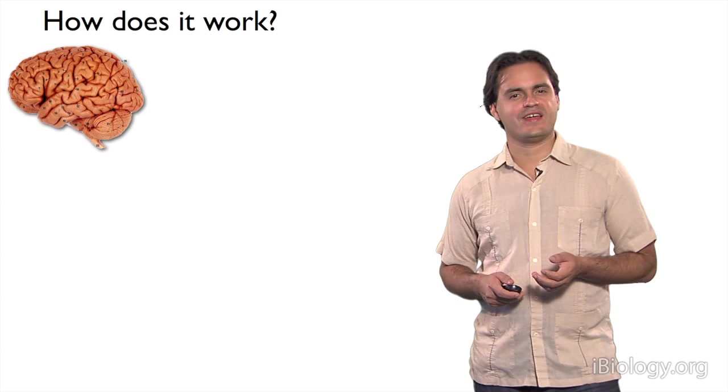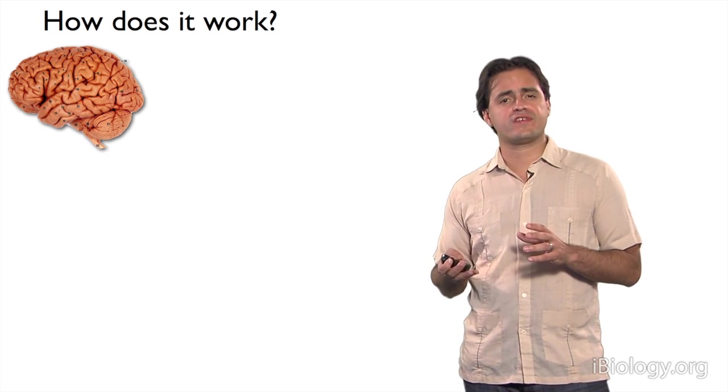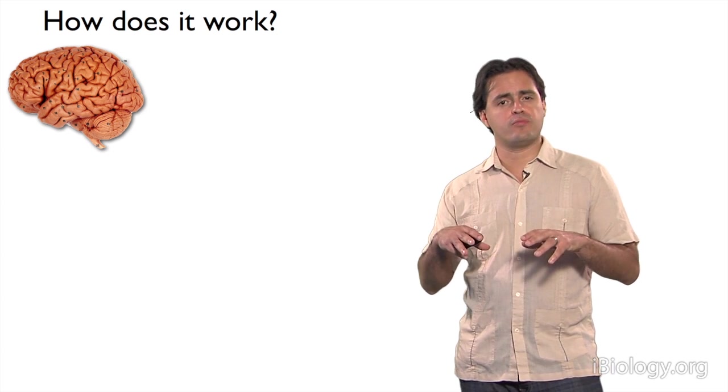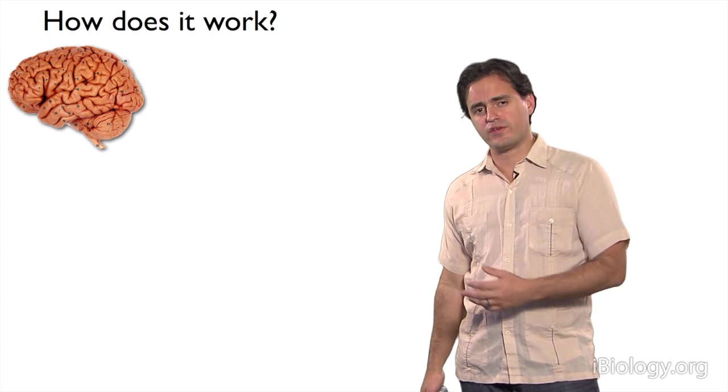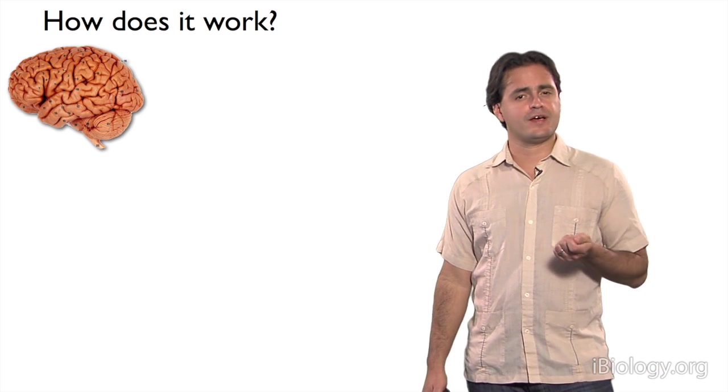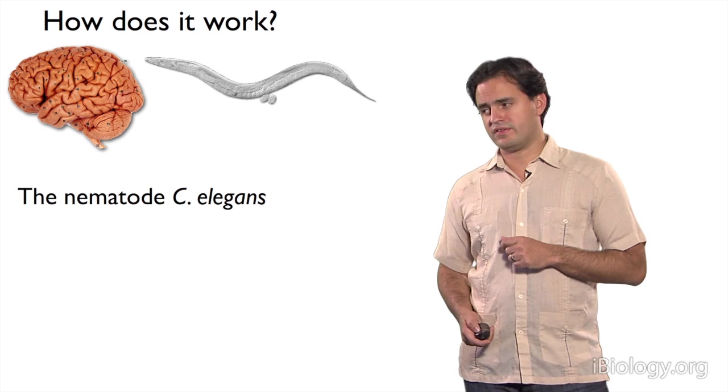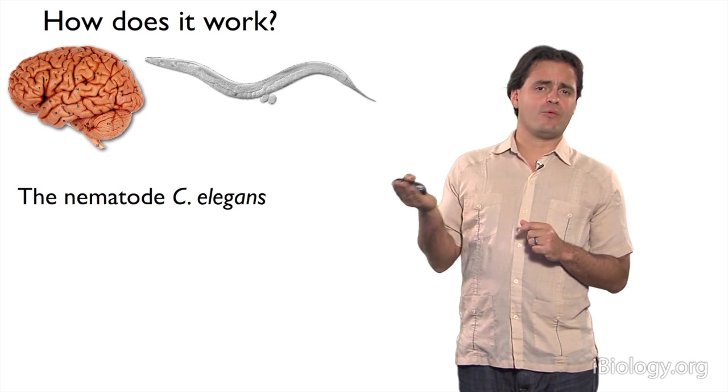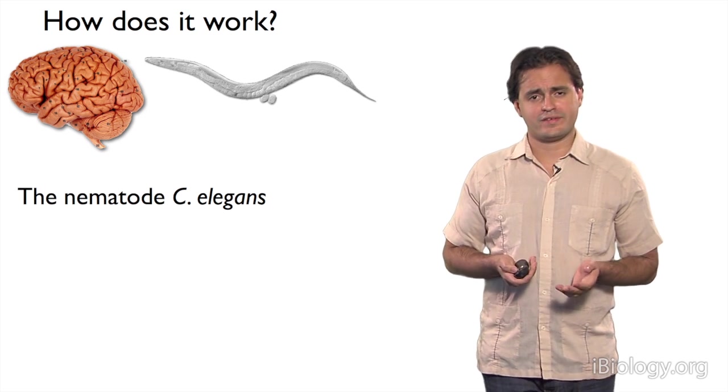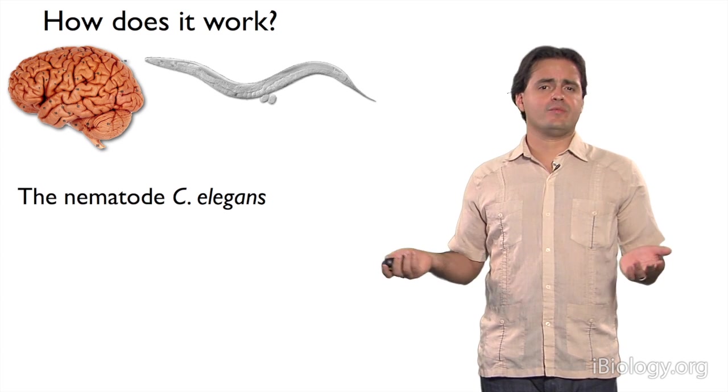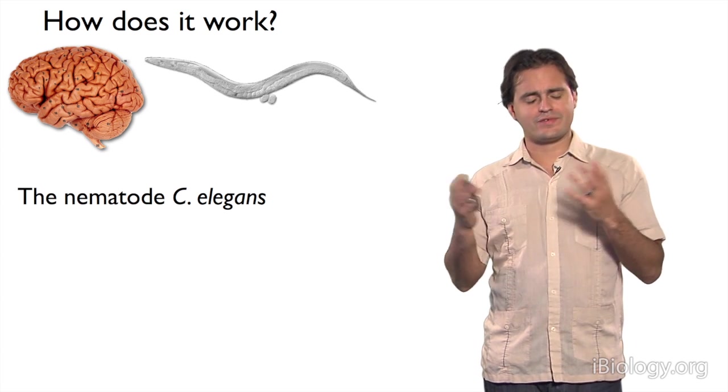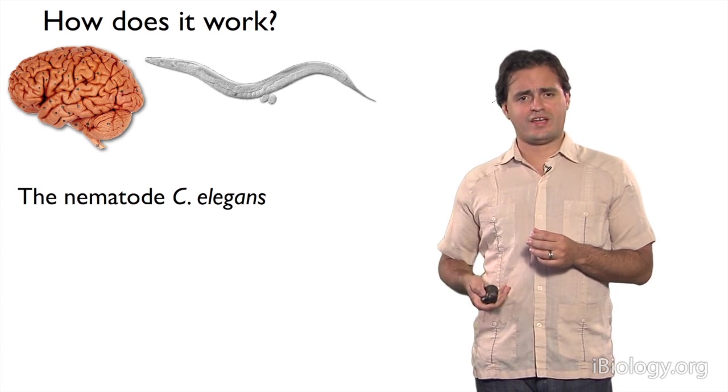We're interested in this question: how is it that the architecture of the brain develops? My lab in particular pursues this question by using the nematode C. elegans as a model organism. C. elegans is a tiny worm, about the size of a comma in a sentence. Some of you might be asking, how is it that you can claim to understand how the human brain, which is so complex, works by looking at such a tiny worm?